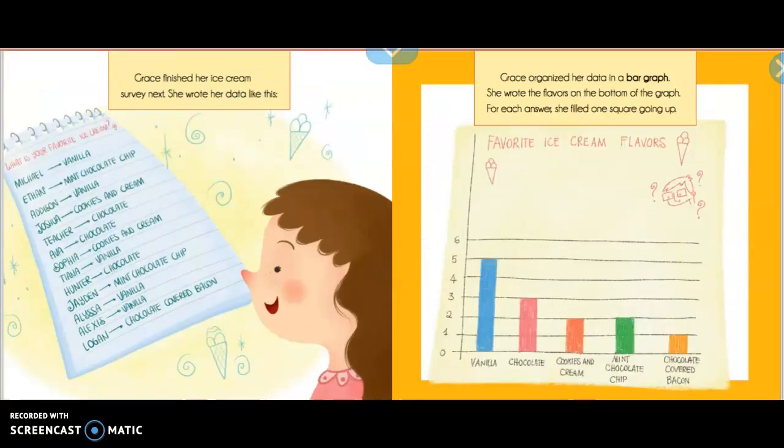Grace finished her ice cream survey next. She wrote her data like this. Grace organized her data in a bar graph. She wrote the flavors on the bottom of the graph. For each answer, she filled one square going up.